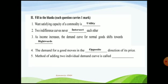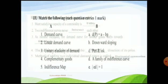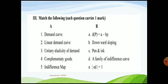Fifth: the method of adding two individual demand curves is called market demand, or mathematically it is horizontal summation. At the same price, two individuals demand different quantities, and adding both quantities gives one value — that is called market demand, which is the horizontal summation of individual demand curves.